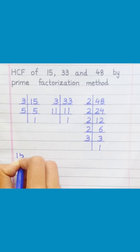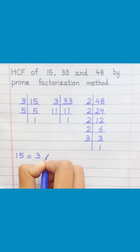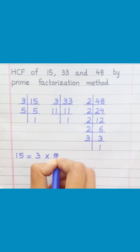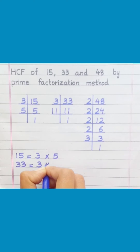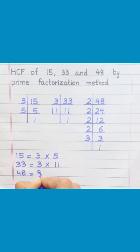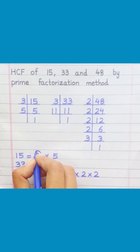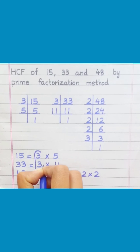15 = 3 × 5. 33 = 3 × 11. 48 = 3 × 2 × 2 × 2 × 2. Loop the factors that are common to all of the given numbers.